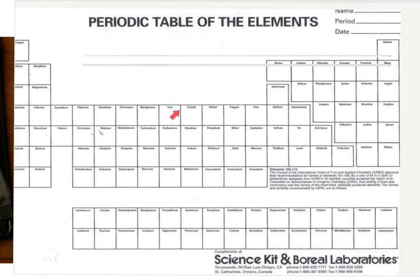...thirteen, fourteen, fifteen, sixteen, seventeen, eighteen — and put those numbers right up at the top of each column. Then number our periods: one, two, three, four, five, six, seven — put those out at the far left edge. Now we can identify a group number and a period number for any element.